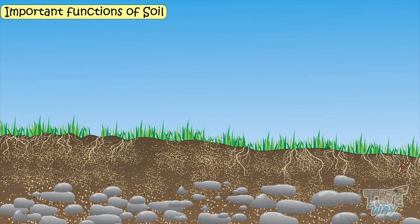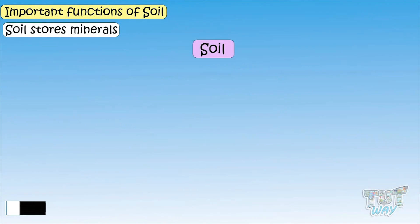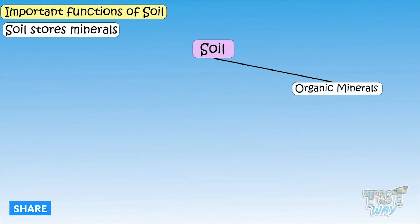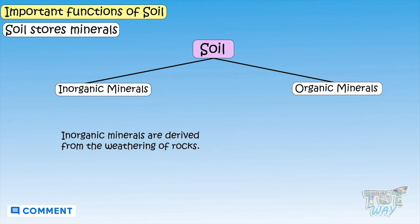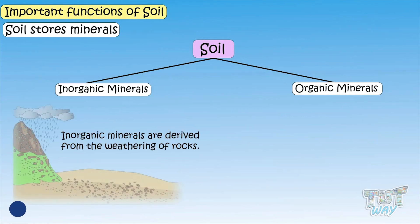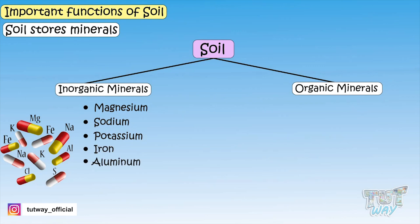One of the functions of soil is that it stores minerals. Soil contains various minerals that act as nutrients for plants. Soil contains both organic and inorganic mineral matters. Inorganic minerals are derived from the weathering of rocks and they can be magnesium, sodium, potassium, iron, aluminum, and sulfur.